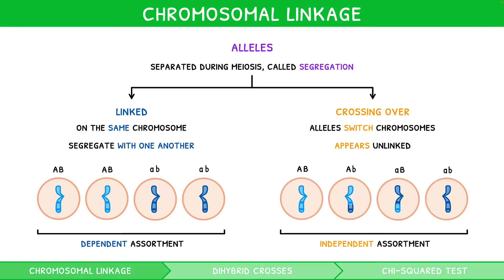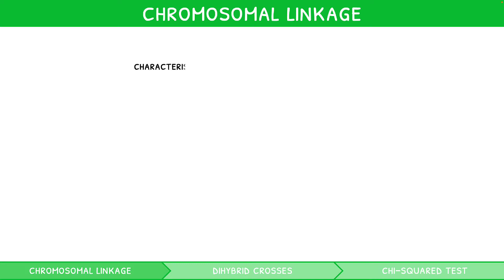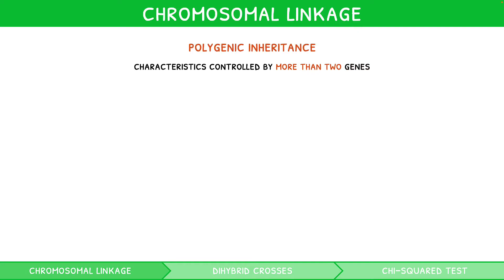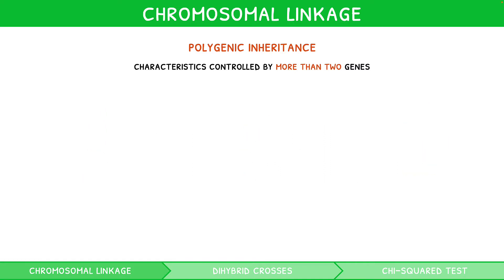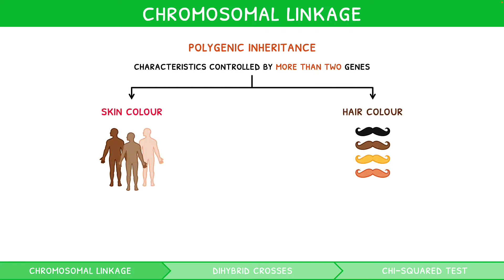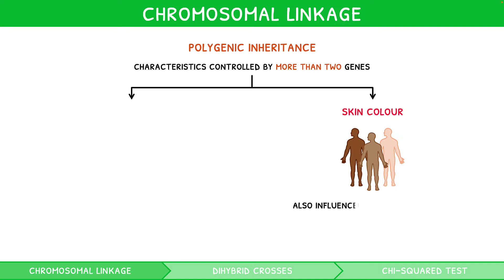Whilst in Topic 3 we learnt about the inheritance of one gene at a time, higher level students are expected to consider two genes together. However, you must also be aware that some characteristics are controlled by more than two genes, known as polygenic characteristics. When modelling the variation of polygenic characteristics, as the number of genes increases, the distribution more closely represents the normal distribution. The common examples you will encounter are skin and hair colour. Interestingly, skin colour is also influenced by the environment, despite being a polygenic characteristic.